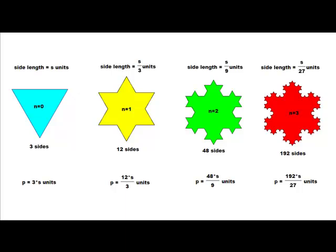Next, when N equals 2, we have a side length of S over 9, dividing again by 3, and multiplying by the 48 sides, so it's equal to 48S over 9. And lastly, when N equals 3, we have a side length of S over 27, and 192 sides. Thus, our perimeter is 192S over 27.